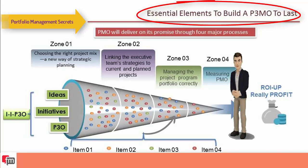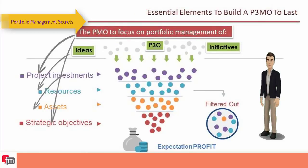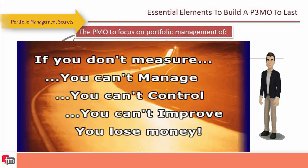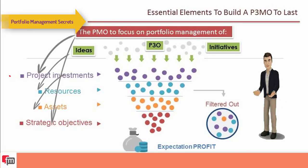PMO value must be measurable to become sustainable: if you can't measure, you can't control; and if you can't control, you can't manage. The PMO must be aligned with the interests and goals of the organization it serves. The recommendation is for the PMO to focus on project investment, resources, assets, and strategic objectives.